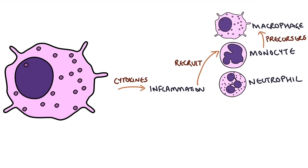Monocytes are precursors to macrophages that float around in the blood. Once they enter tissues they differentiate into macrophages and can carry out all the processes that macrophages normally carry out. Neutrophils are another type of phagocyte that circulate in the blood and can enter the tissues and help by destroying invading pathogens.